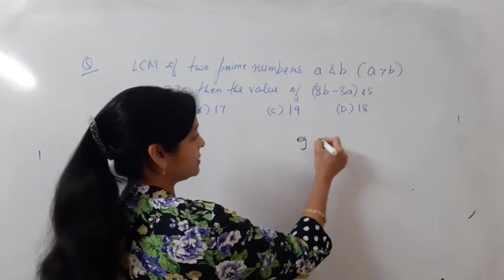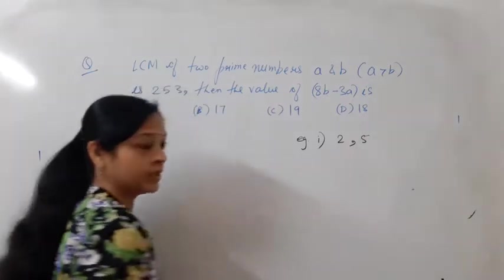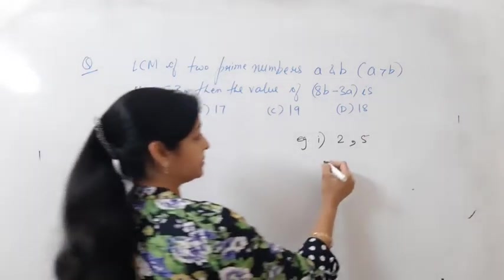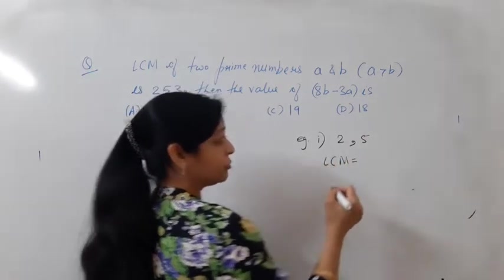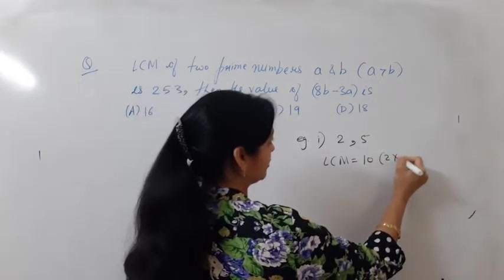Let us take a very easy example. Suppose the numbers are 2 and 5, then what will be their LCM? So LCM of 2 and 5 will be, yes, 10. That means what you have done is 2 into 5, right?